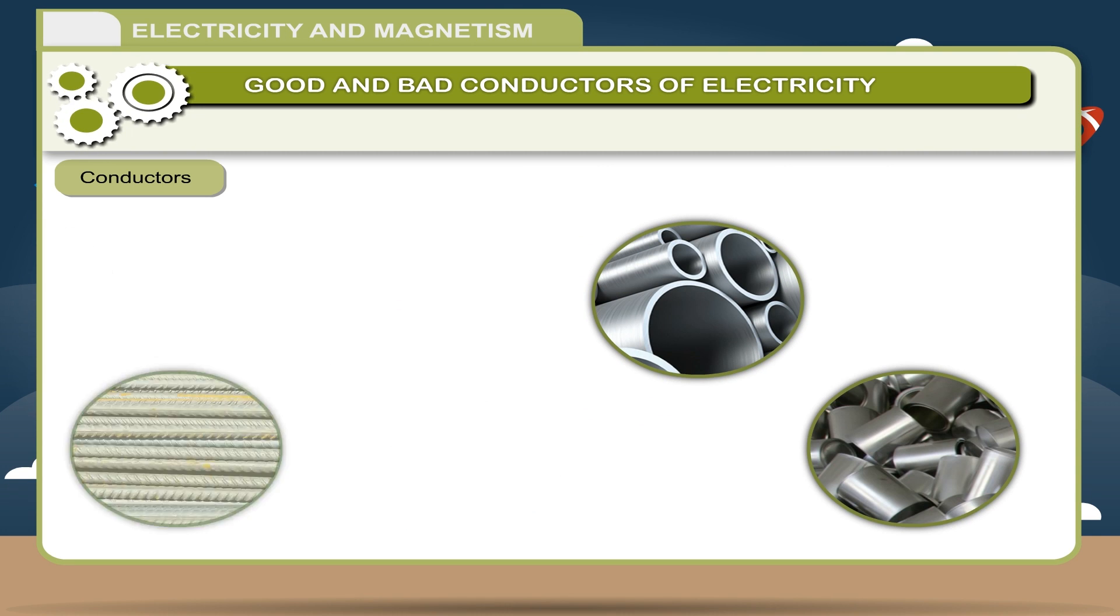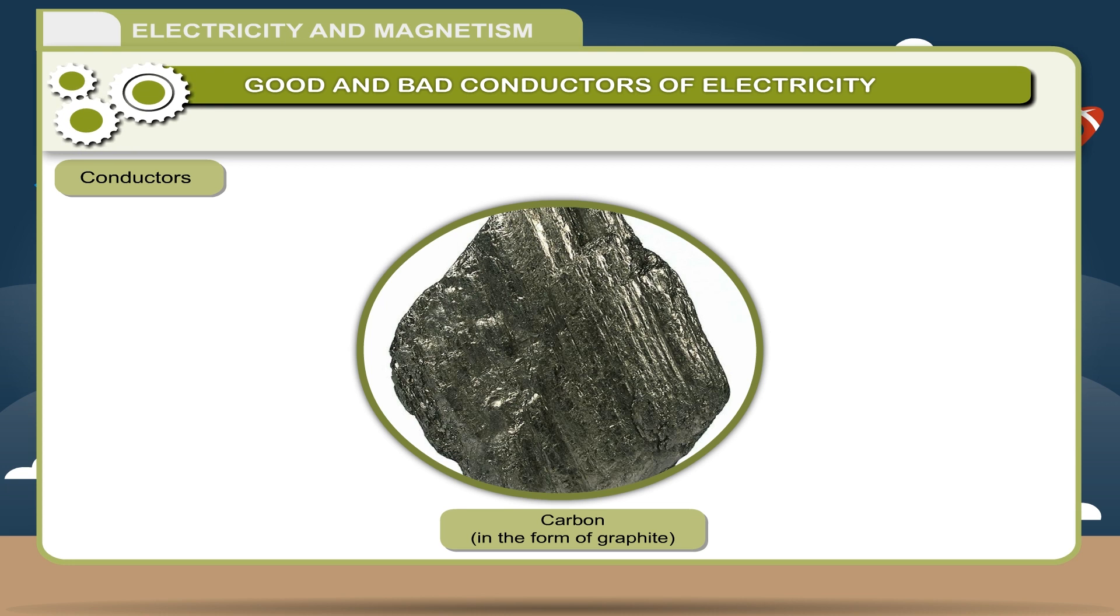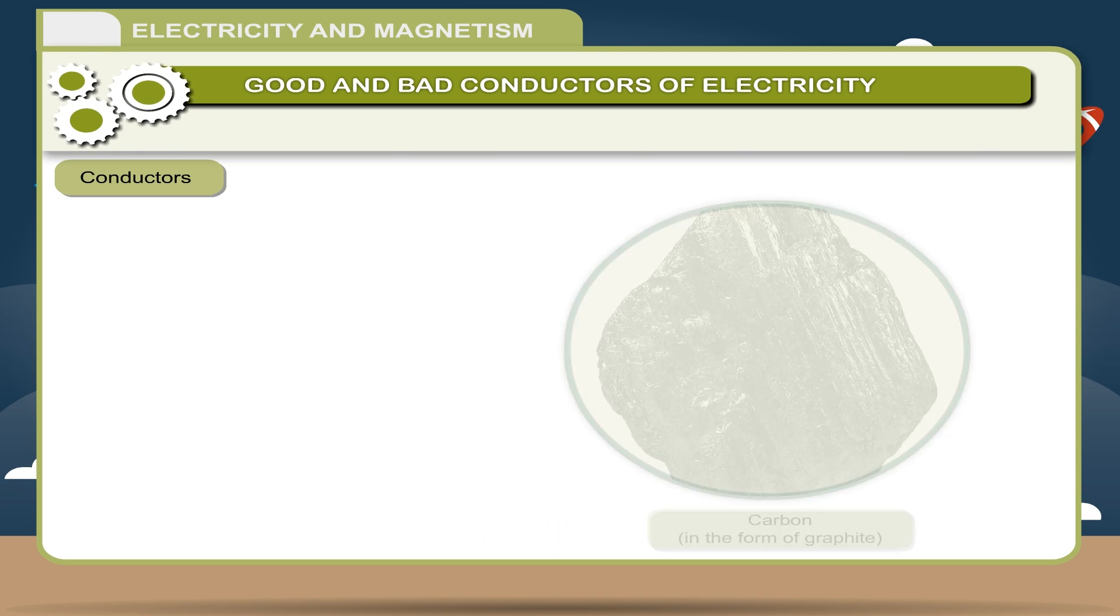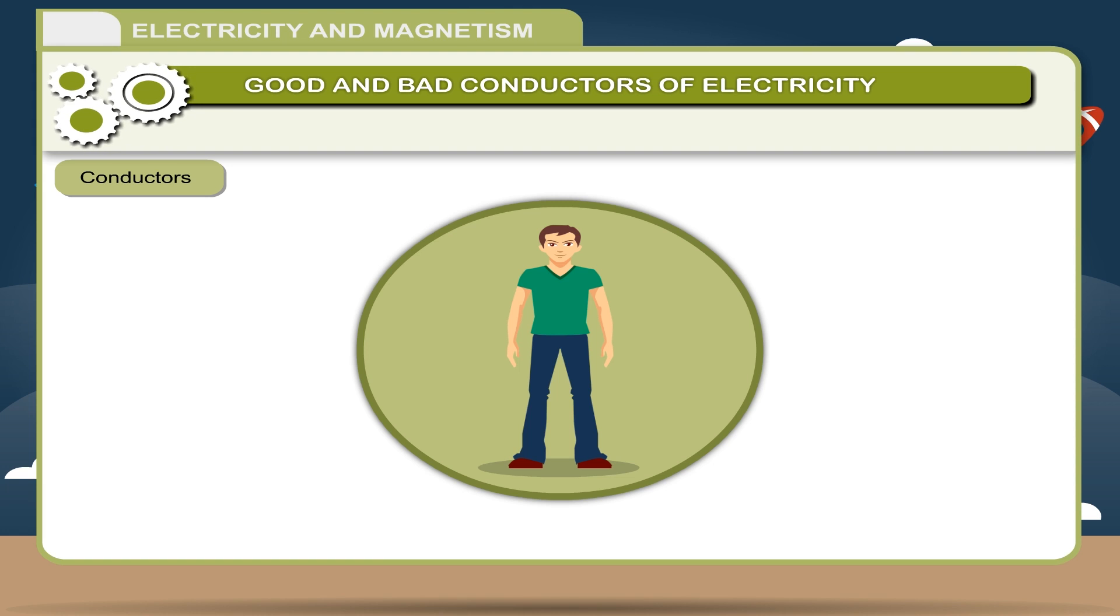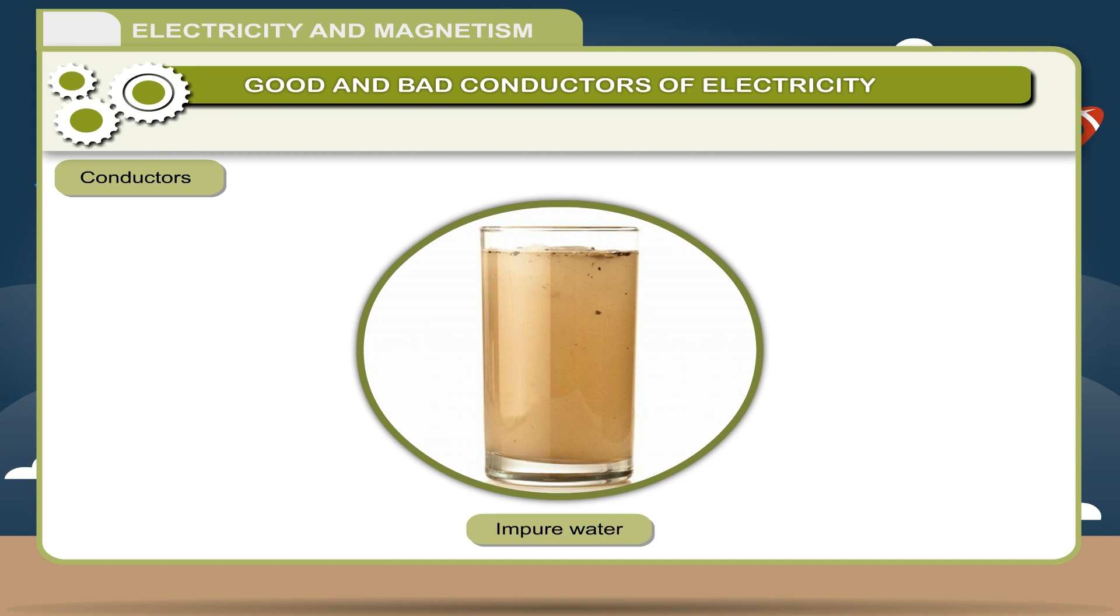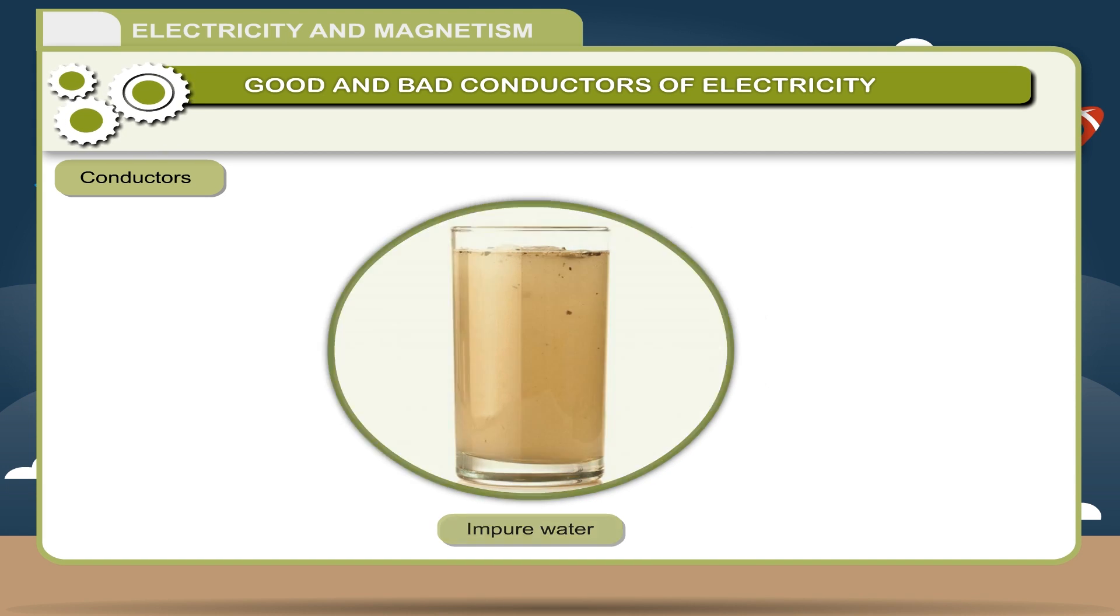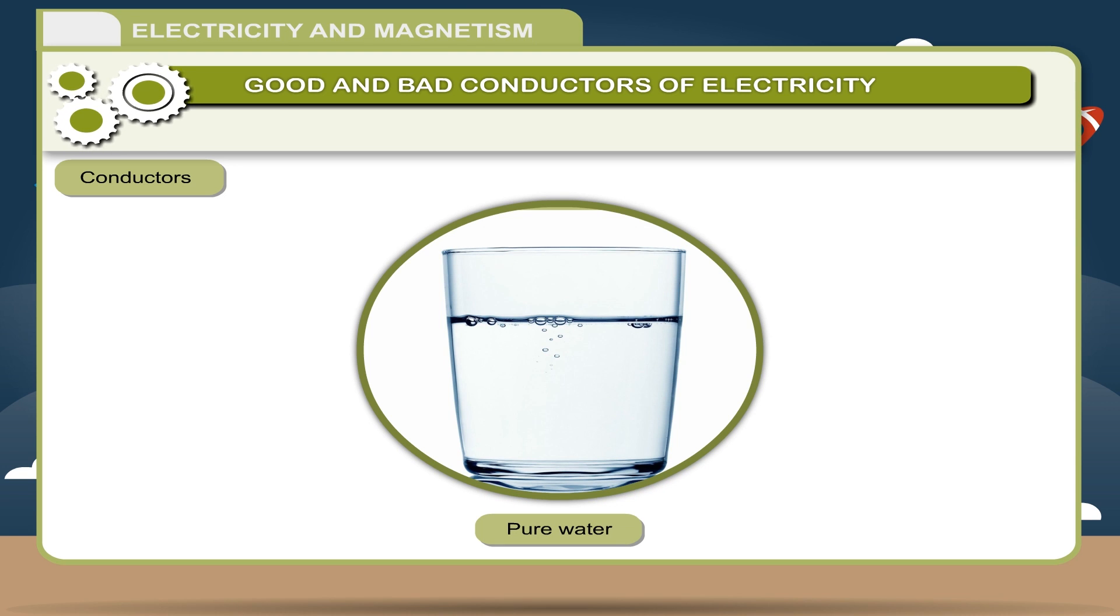Conductors. The materials that allow electric current to pass through them are called conductors. All metals are good conductors of electricity. Carbon in the form of graphite is the only non-metal which is a good conductor of electricity. The electric current is conducted through human body also. Impure water is a good conductor of electricity whereas pure water, distilled water, is not.